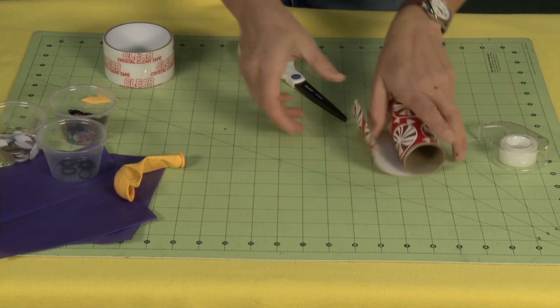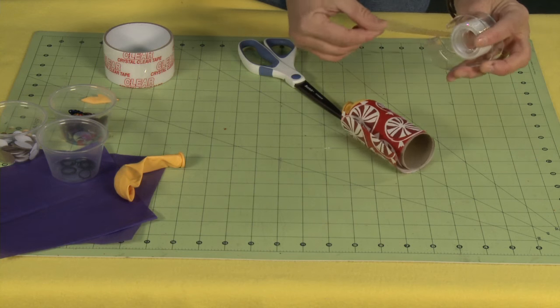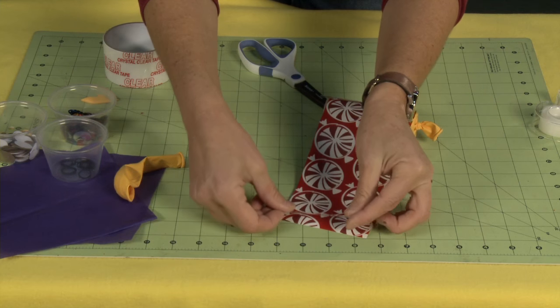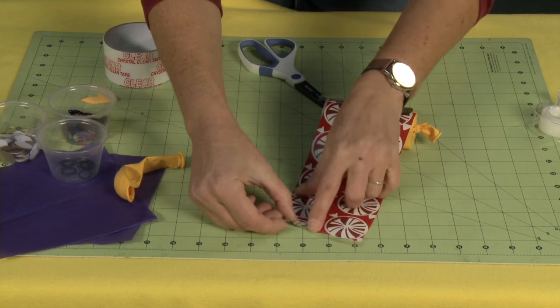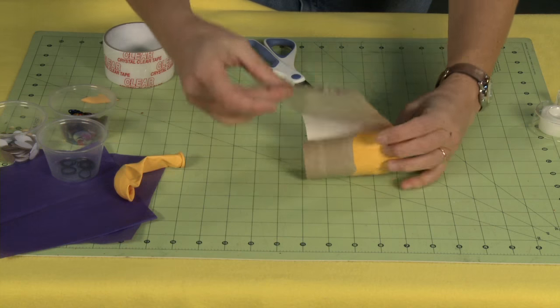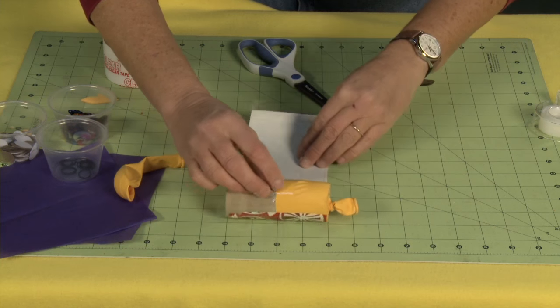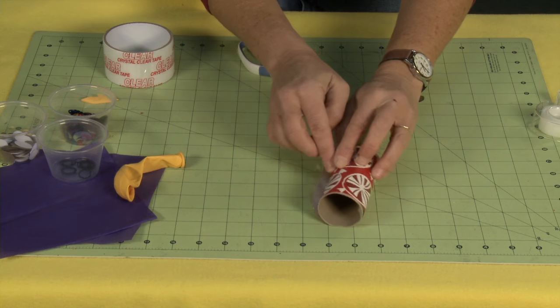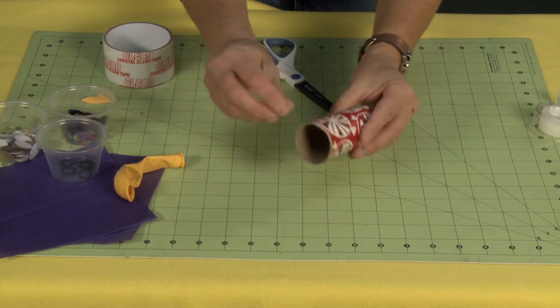And then what I found is easiest is to take my tape, get it set, put it on the outside edge of my paper so that I can just wrap my tube and it'll just stick right there like that. And now it's nice and covered.